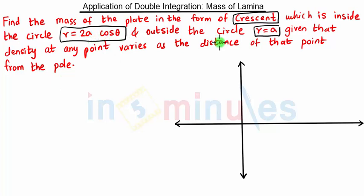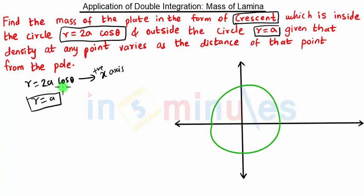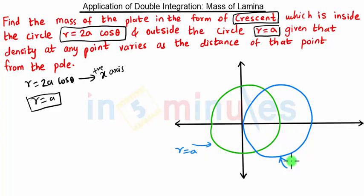So r equal to 2a cos theta and r equal to a indicates we are given polar coordinates. r equal to 2a cos theta is a circle passing through the origin with center on the positive x-axis, and r equal to a is a circle centered at the origin. Both circles have radius a. This is r equal to a and this is r equal to 2a cos theta.